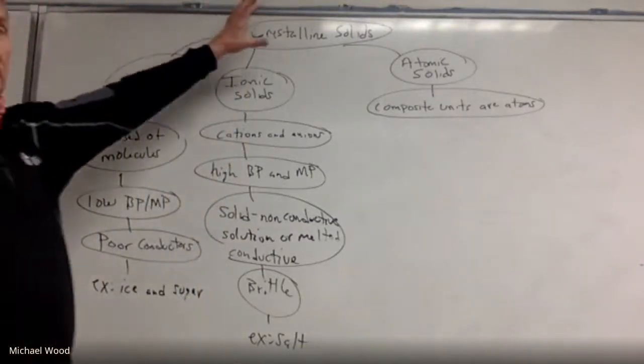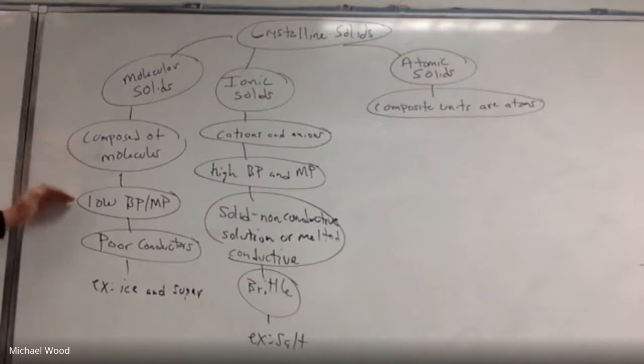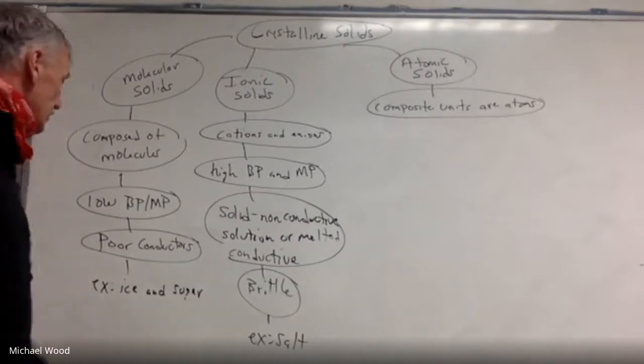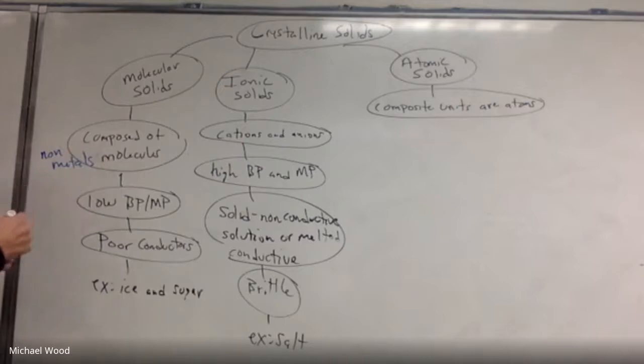So let me just review. We talked about crystalline solids, the whole category, and then we had molecular solids. These are composed of molecules. They're composed of nonmetals. They have a low melting point and boiling point. They're poor conductors, and examples of those are ice and sugar.